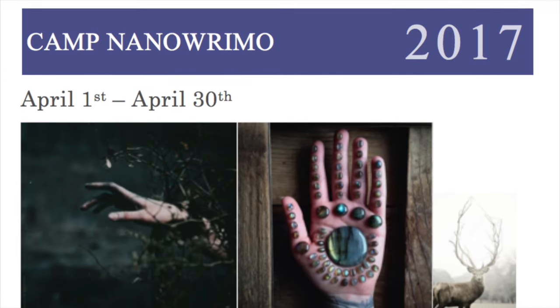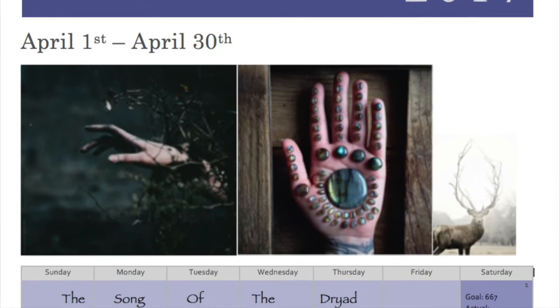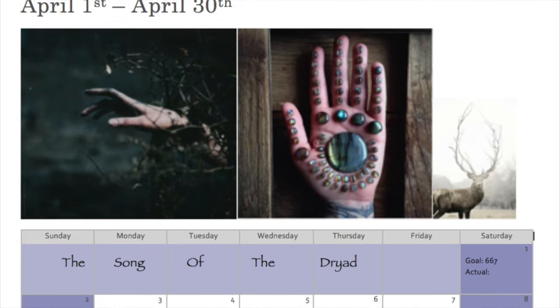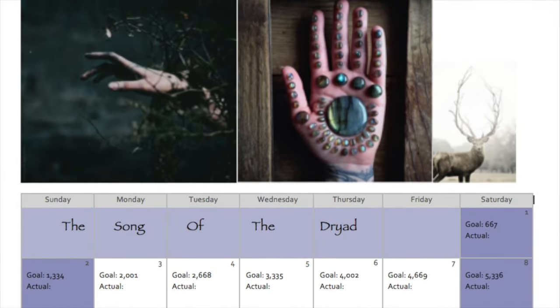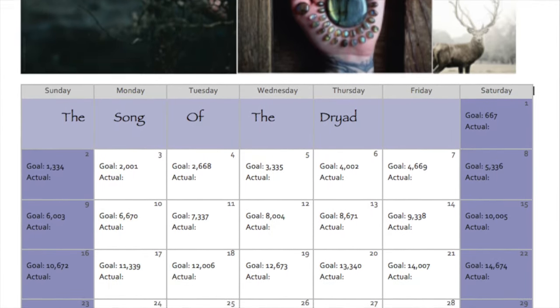Now this is the calendar that I made for myself. I used a color scheme that fits the mood of the novel as well as images that inspire me. I really like how it turned out.